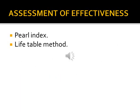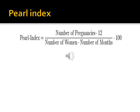How to assess effectiveness? There are two methods: the Pearl Index and life table methods. Life table methods are used by insurance companies and measure effectiveness through long-term use. The Pearl Index equals the number of all pregnancies that occurred in all women, multiplied by 12, multiplied by 100, divided by the number of all women and the number of all months observed.